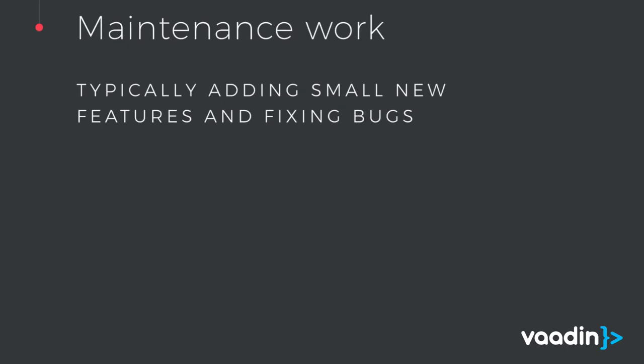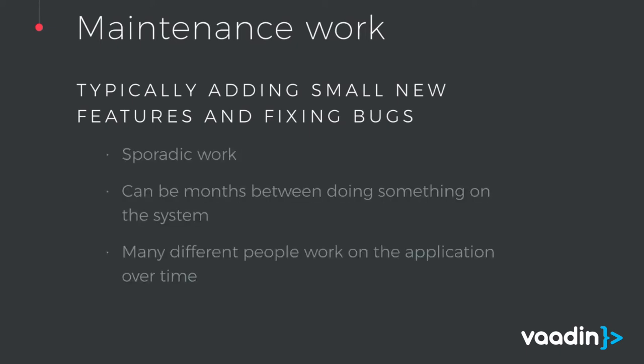So what is maintenance work? Typically it's adding small new features and fixing bugs. Usually this happens only occasionally — maybe once a month, once a week, a couple of times a year — but it could be that there's a long time before anything changes. Usually we have a lot of different people working on the same application, so when you, the maintainer, come in, there could be quite a lot of changes that you are not aware of.